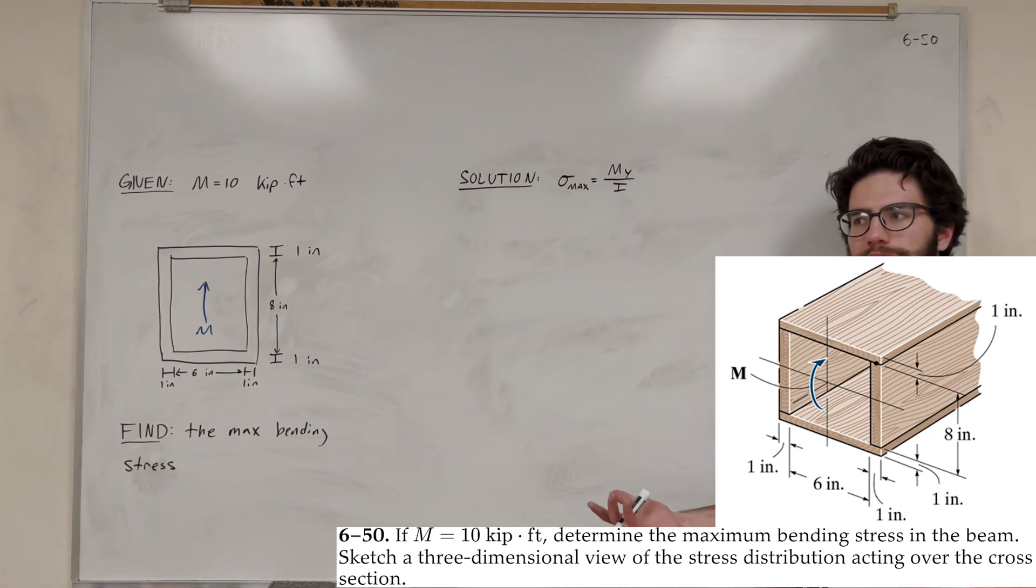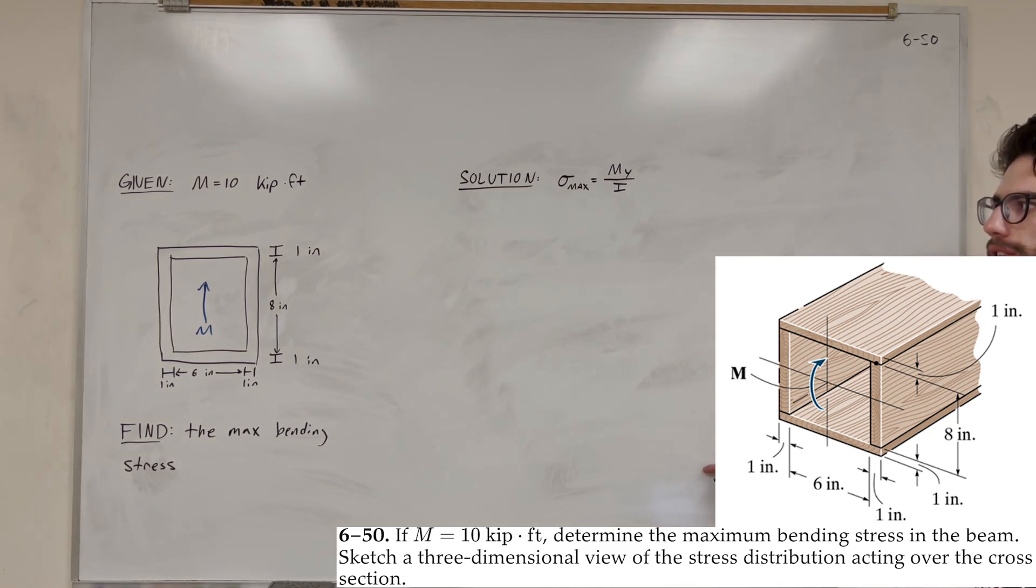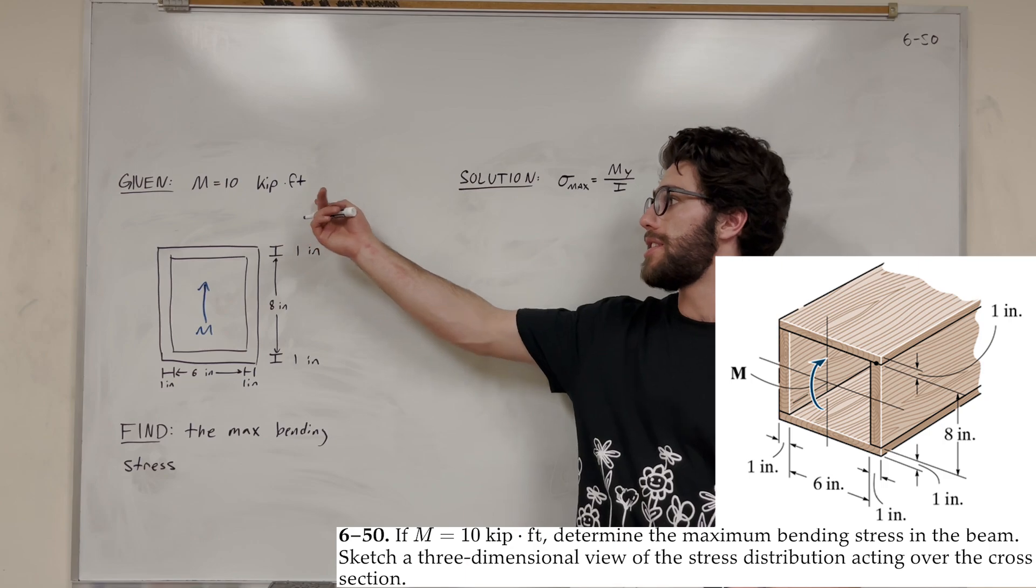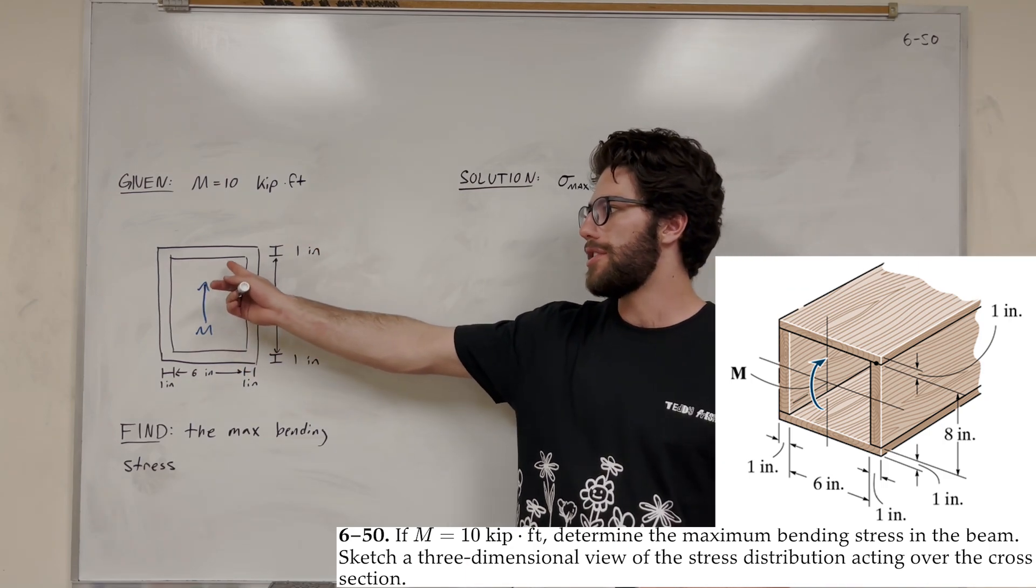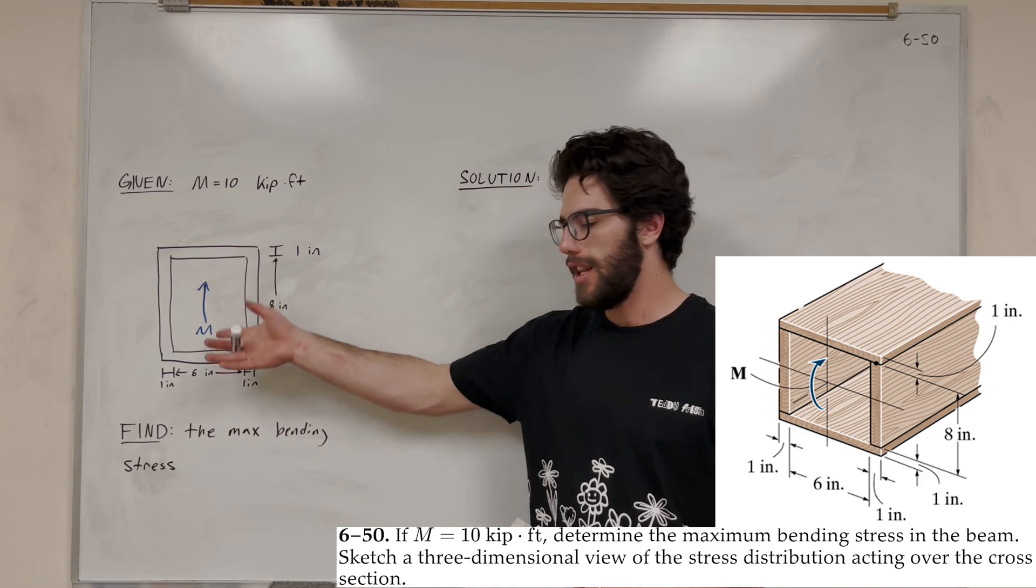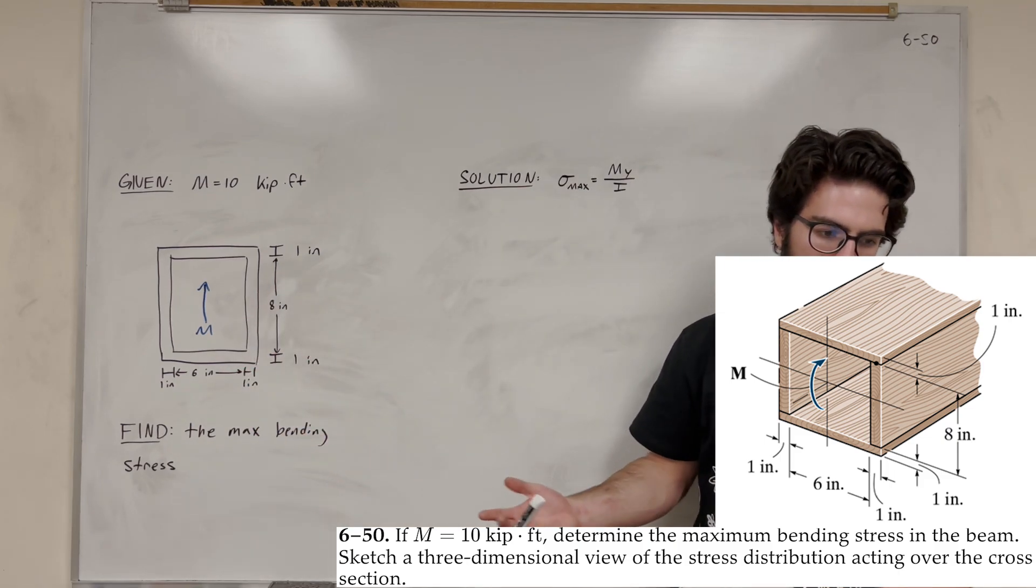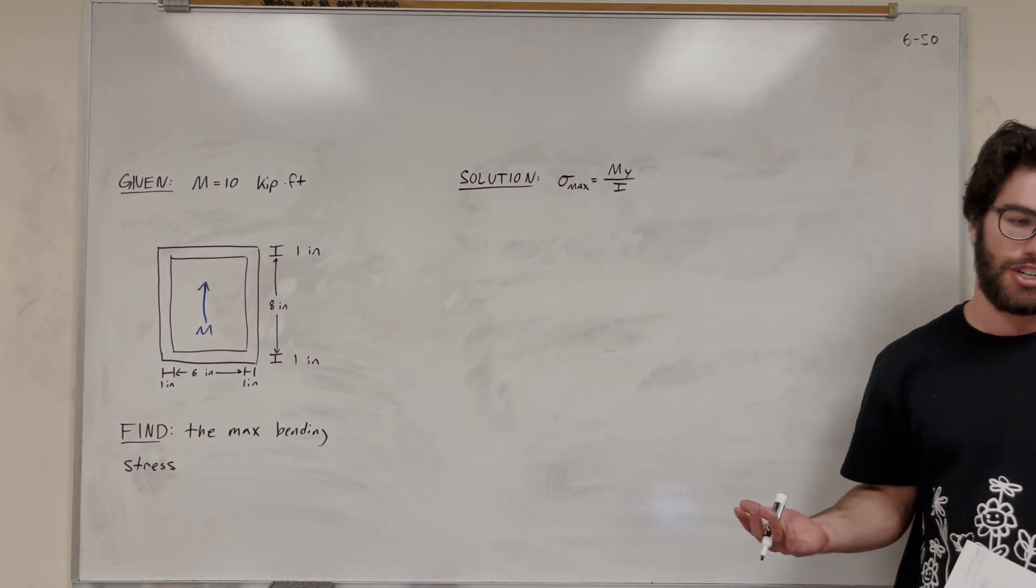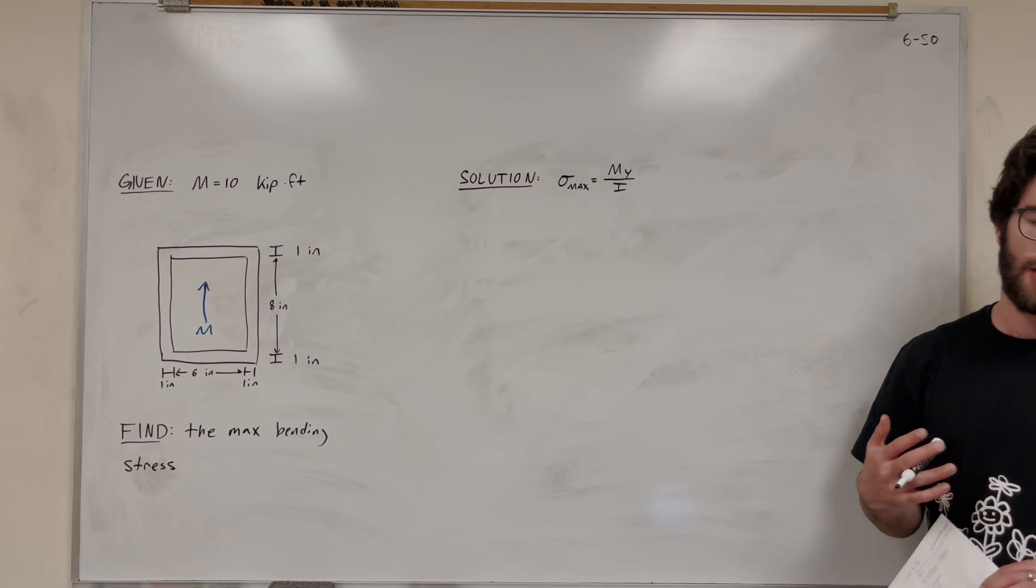What's up Cal gang? Welcome back to Mechanics and Materials. So we've got this problem here. We're applying a 10 kip-feet moment to this cross-sectional area, and we want to find the max bending stress in the beam. Then we also want to draw a three-dimensional view of the stress distribution acting over the cross-section.